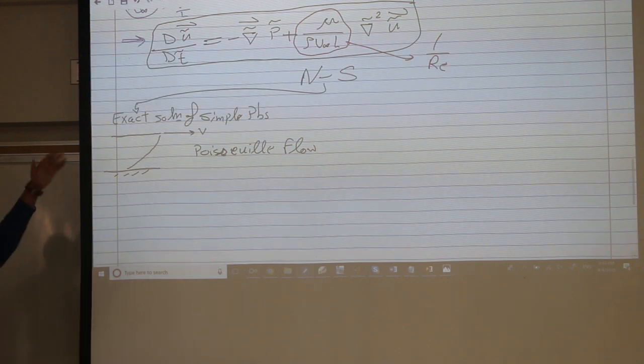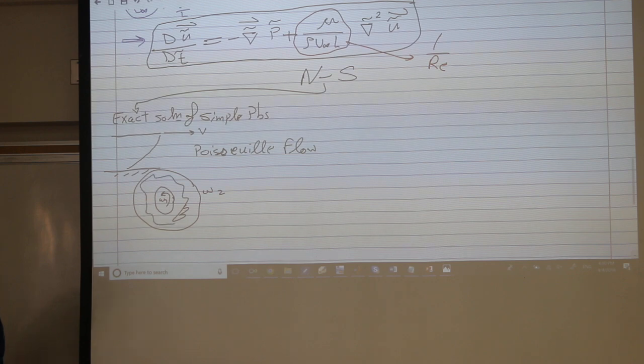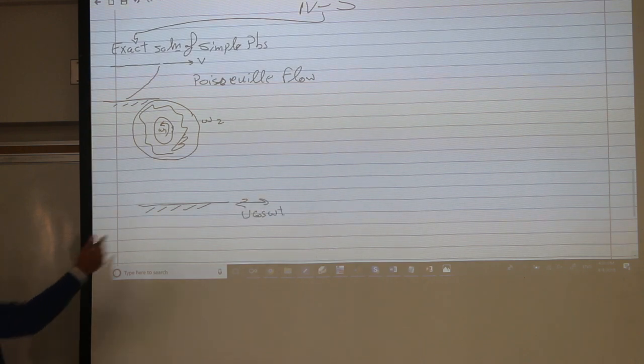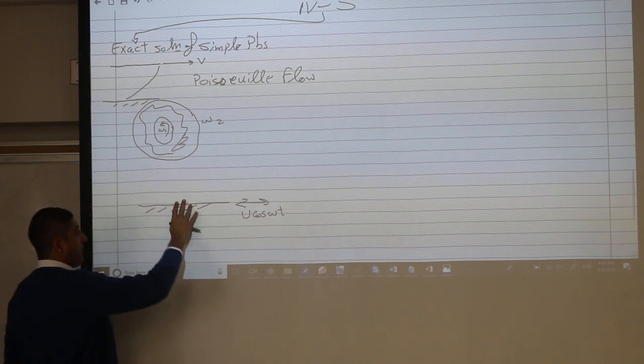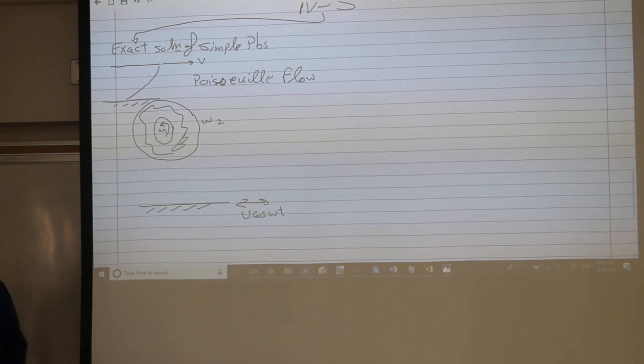The problem is pretty simple. We can also solve when we have two rotating cylinders, omega 1, omega 2, with fluid inside between the two. We can solve this problem exactly, right? Not only steady ones, we have unsteady ones like the Stokes problem. We have this wall oscillating back and forth with u cosine omega t. We can know how the flow above this wall oscillates in time and along y. We can solve these problems exactly.